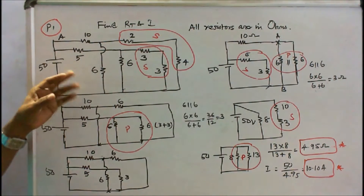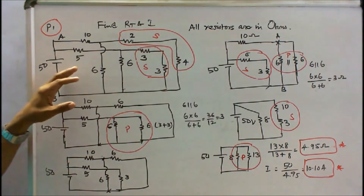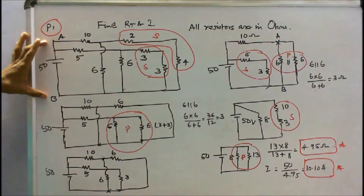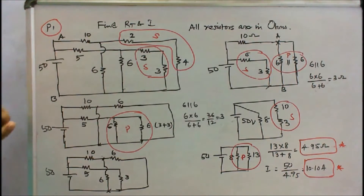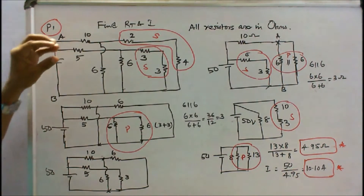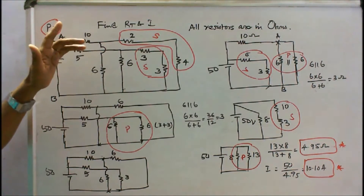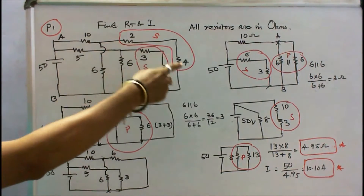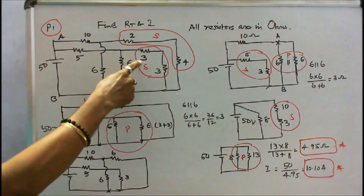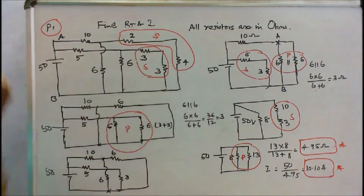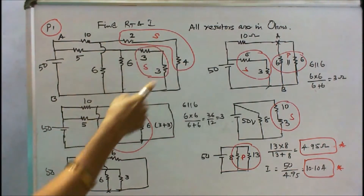In this problem, eight resistances are connected as shown in the figure. We have to find the total resistance across A and B and the total current. First, we identify which resistances are connected in series and which are in parallel. The resistances 2Ω and 4Ω are in series; similarly, 3Ω and 3Ω are in series. So 2 + 4 = 6, and 3 + 3 = 6.